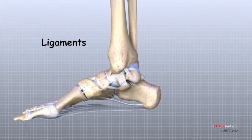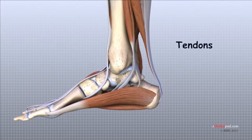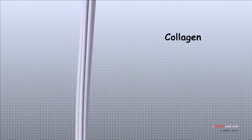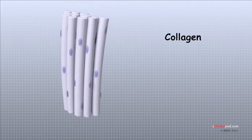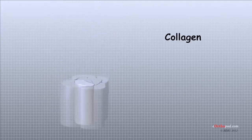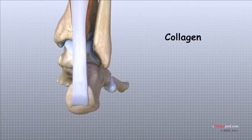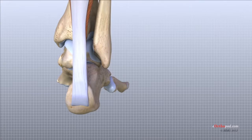Ligaments are the soft tissues that attach bones to bones. Tendons are soft tissue structures that attach muscles to bones. Both of these structures are made up of small fibers of a material called collagen. The collagen fibers are bundled together to form a rope-like structure. Ligaments and tendons come in many different sizes and, like rope, are made up of many smaller fibers. The thicker the ligament or tendon, the stronger it is.